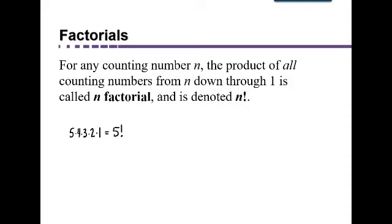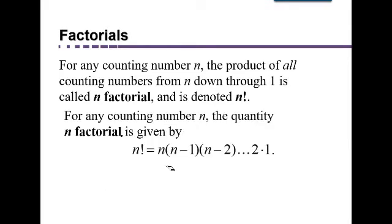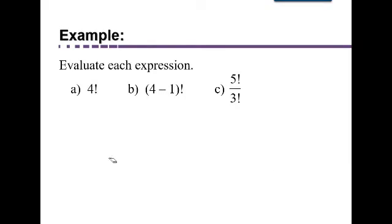So any 5 down to 1, the product of all those factors, is called 5 factorial. n factorial would be n times 1 less than n times 2 less than n, all the way down to 1. Let's do some examples here. 4 factorial would be 4 times 3 times 2 times 1, which is 24.